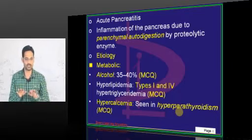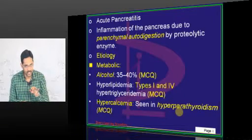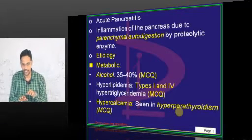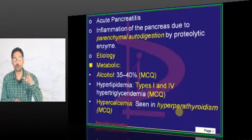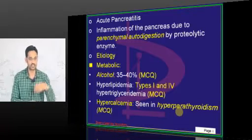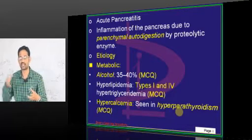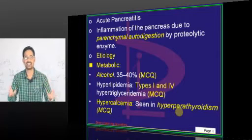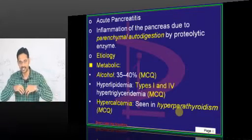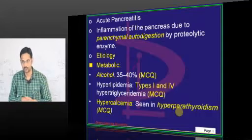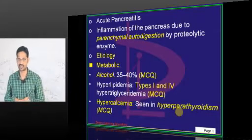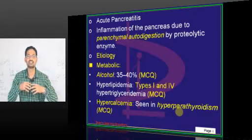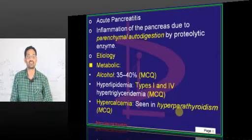There should be a balance between pro-inflammatory and anti-inflammatory. But in pancreatitis, because of the insult or unknown reasons, there is increased pro-inflammatory activity. Macrophages, neutrophils, platelets, and chemotactic agents come in and start secreting cytokines, growth factors, platelet-derived growth factors, and prostaglandins — all of which drive an inflammatory cascade.